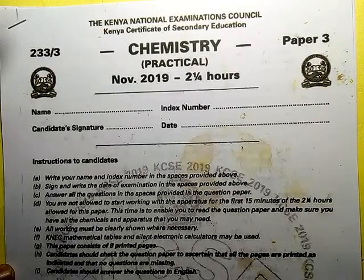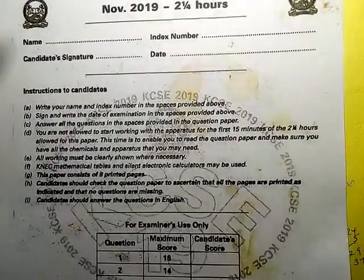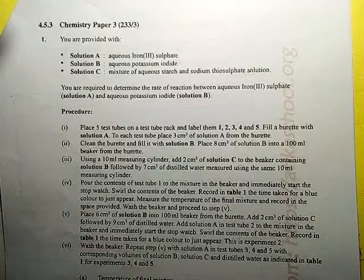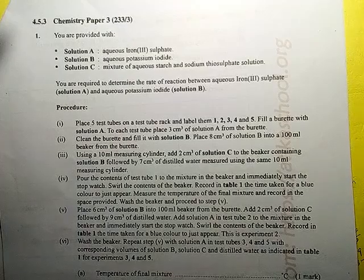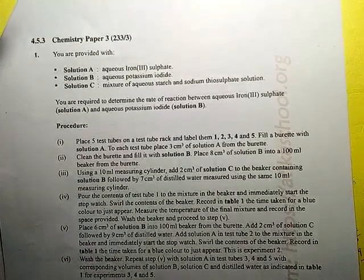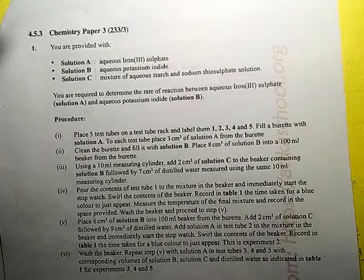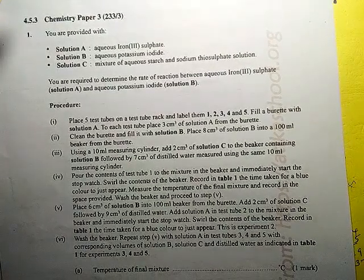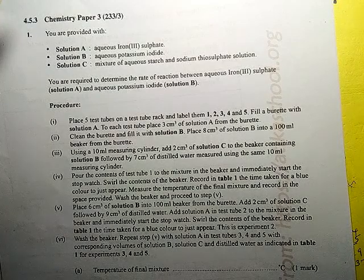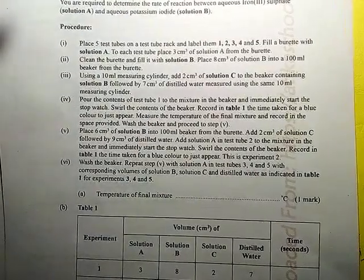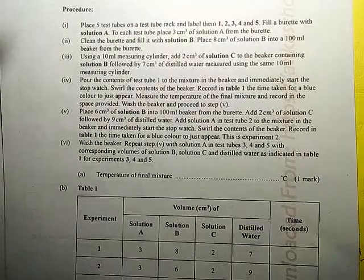Welcome, this is a 2019 Paper 3 practical. Let us go inside and check what we were provided with. This is how the paper was looking: you are provided with solution A, solution B, and solution C. You are required to determine the rate of reaction between aqueous ion 2 sulfate, solution A, and aqueous potassium iodide, solution B.